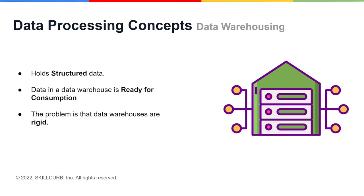Data in data warehouses is stored such that it's ready to be consumed at any time. However, the structure of data warehouses is rigid and cannot be changed easily, and even though the data is easier to understand, it's not as up to date as it could be.